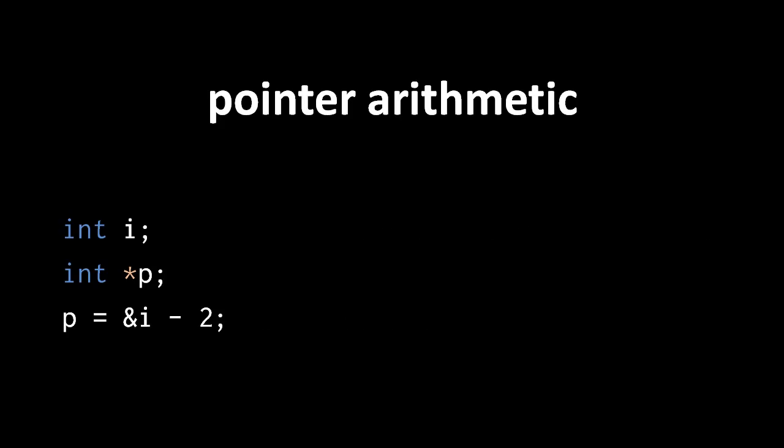Once we have a pointer value produced by addition or subtraction, we may dereference it just as we may any other pointer value. So here we can dereference p to get an int value even though p currently points to an address which may not even contain a variable.